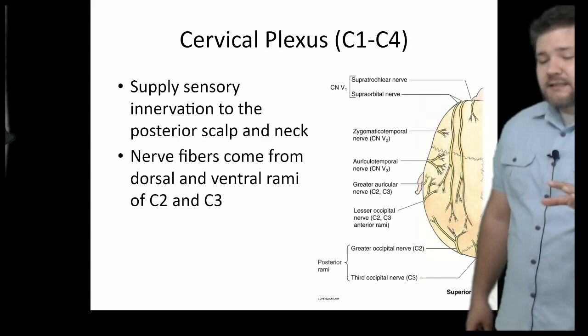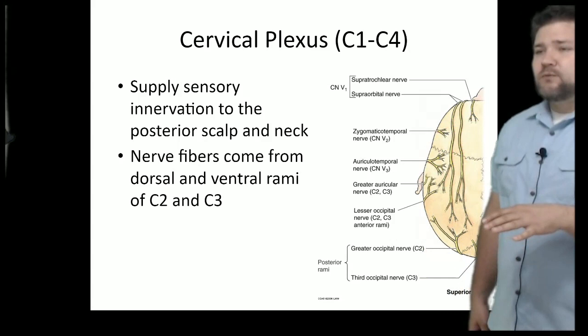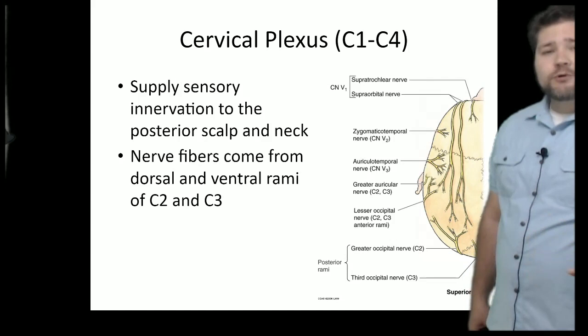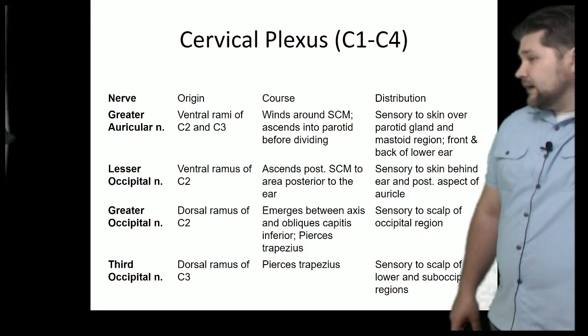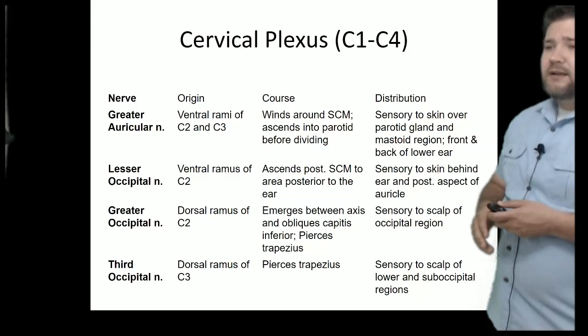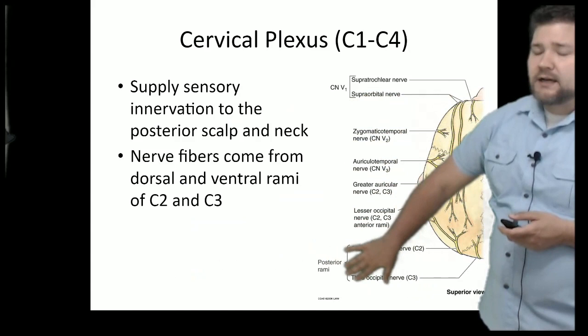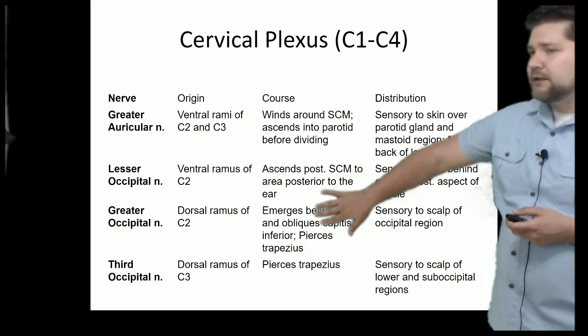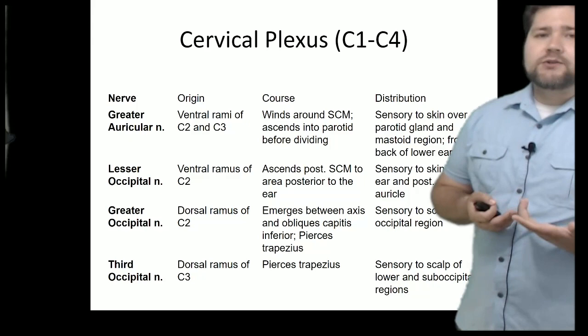The cervical plexus, from C2 and C3 dorsal and ventral rami, provides sensory innervation to the back of the head. The four major nerves are the greater occipital and third occipital (back of the head) and the great auricular and lesser occipital (lateral aspect of the head). These are all direct sensory innervations from the spinal cord with no motor component.